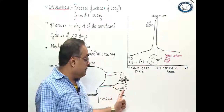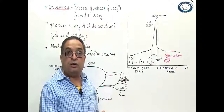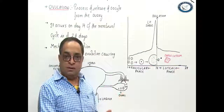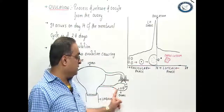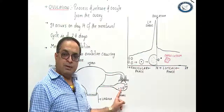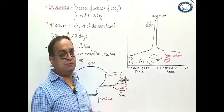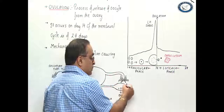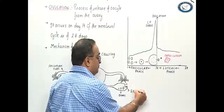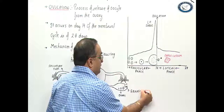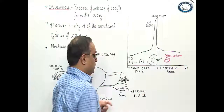The follicle develops in the ovary. In our previous lectures, we discussed folliculogenesis, the process of formation of the follicle. The different stages of follicular development are primordial follicle, primary follicle, secondary follicle, tertiary follicle, and Graafian follicle. In this diagram you can see the Graafian follicle, the final mature follicle which undergoes ovulation.